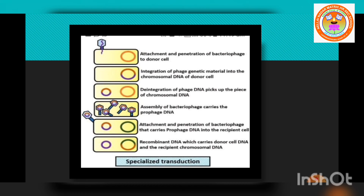In specialized or restricted transduction, the ability of the bacteriophage to carry only a specific region of bacterial DNA is called specialized or restricted transduction. The steps include: attachment and penetration of bacteriophage to donor cell; integration of phage genetic material into the chromosomal DNA of the donor cell; de-integration of phage DNA picking up a piece of chromosomal DNA; assembly of bacteriophage carrying the prophage DNA; attachment and penetration of that bacteriophage into the recipient cell; forming recombinant DNA which carries donor cell DNA and the recipient chromosomal DNA.